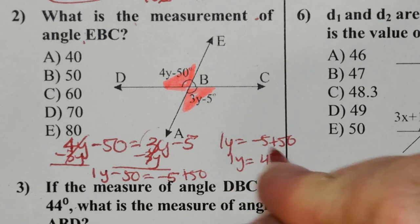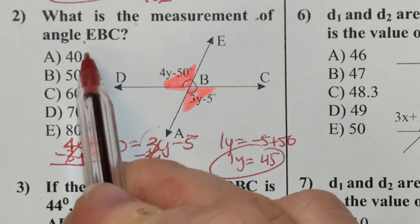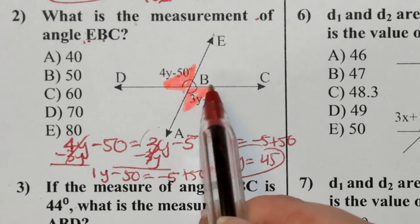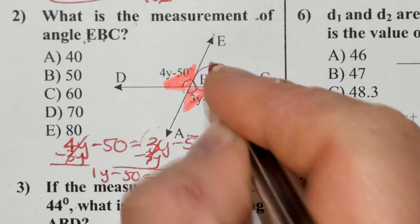1y is equal to 45. Let's go back and read. We want to know the measure of angle EBC. EBC. What is this angle measurement?